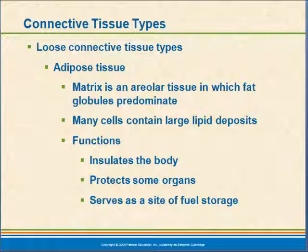There are a lot of cells that contain these large lipid deposits. It functions in many ways — not only for energy storage, although that is a major aspect of it, but it also insulates the body and protects some organs. As an energy storage, this is a very effective way for the body to store energy. Adipose tissue lipids contain a lot more calories per gram than carbohydrates and proteins. Carbohydrates and proteins have four calories per gram, lipids have nine, so this is a compact way of storing high energy.